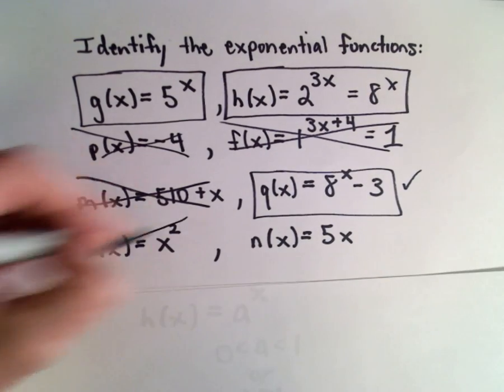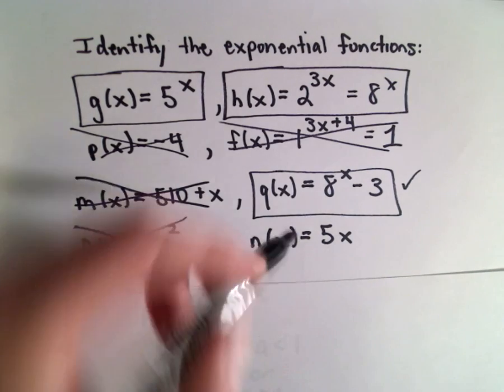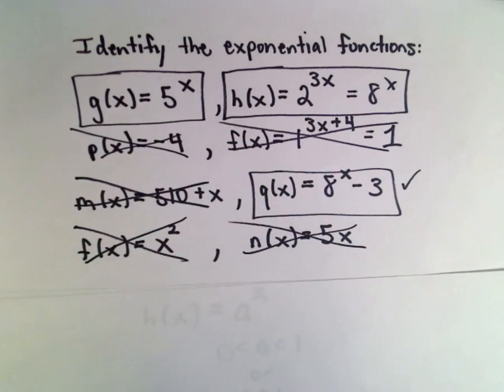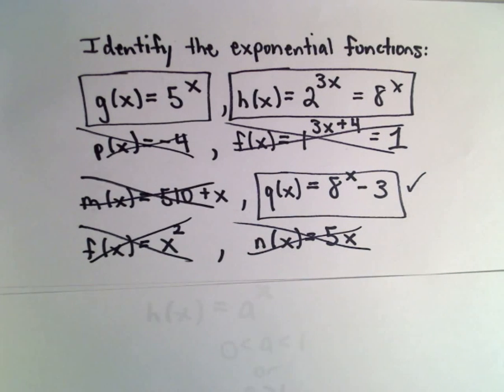x squared. Well that's quadratic. That doesn't work. And n(x) equals 5x. That's just a linear function, so it looks like we have 1, 2, 3 exponential functions.